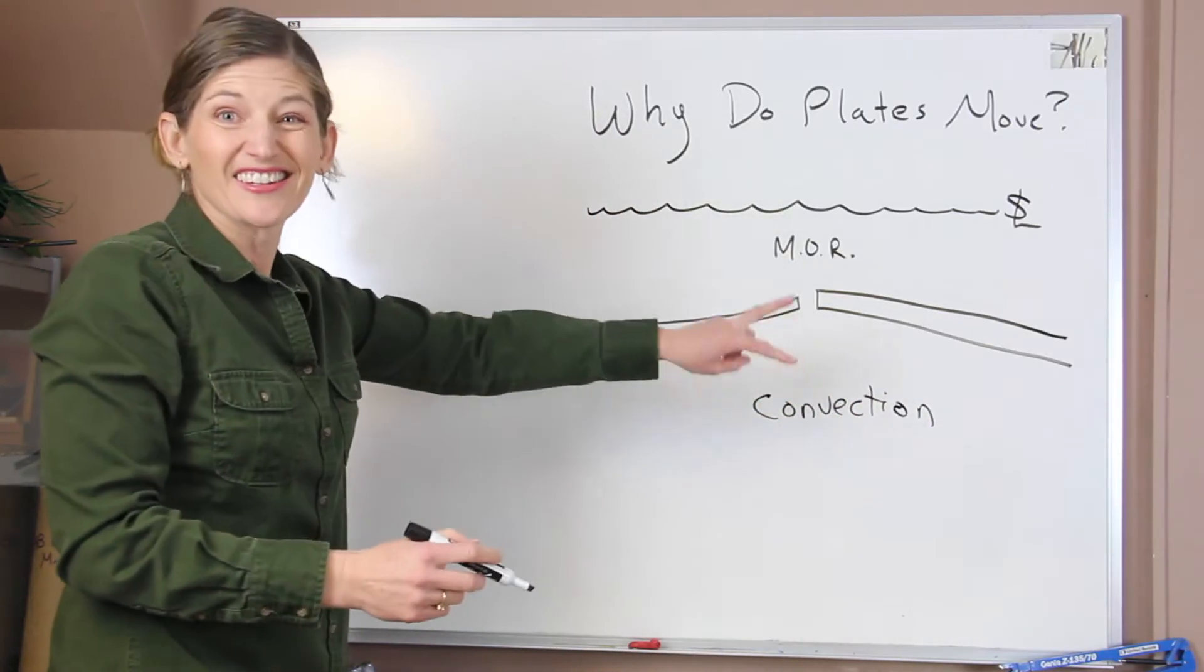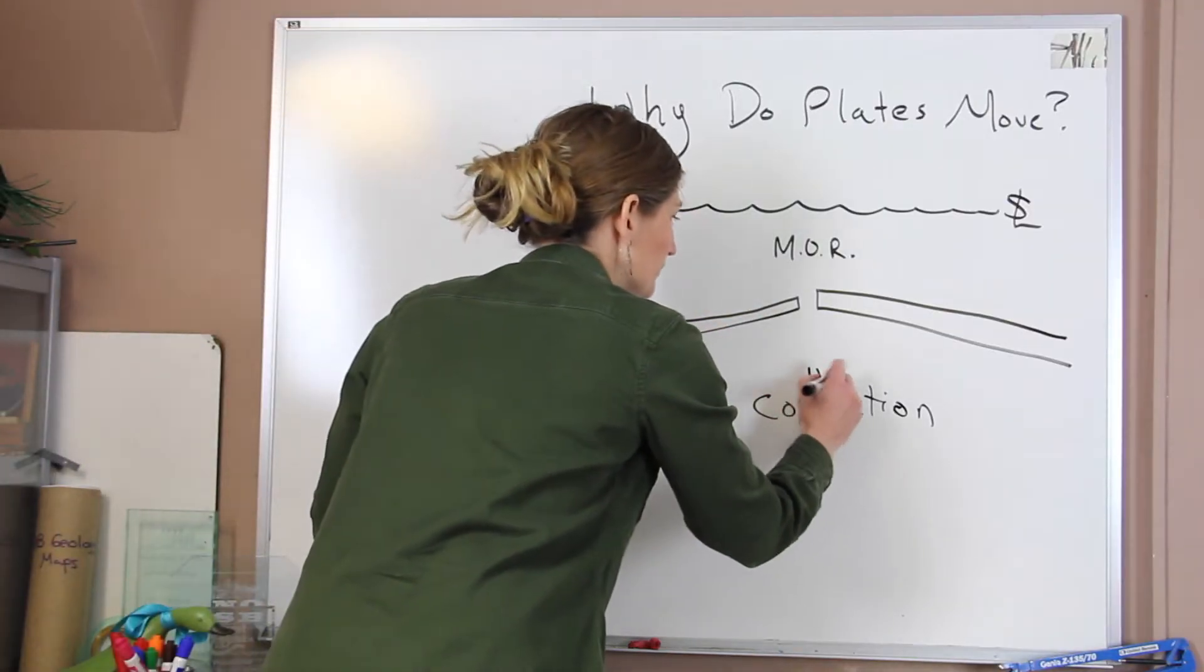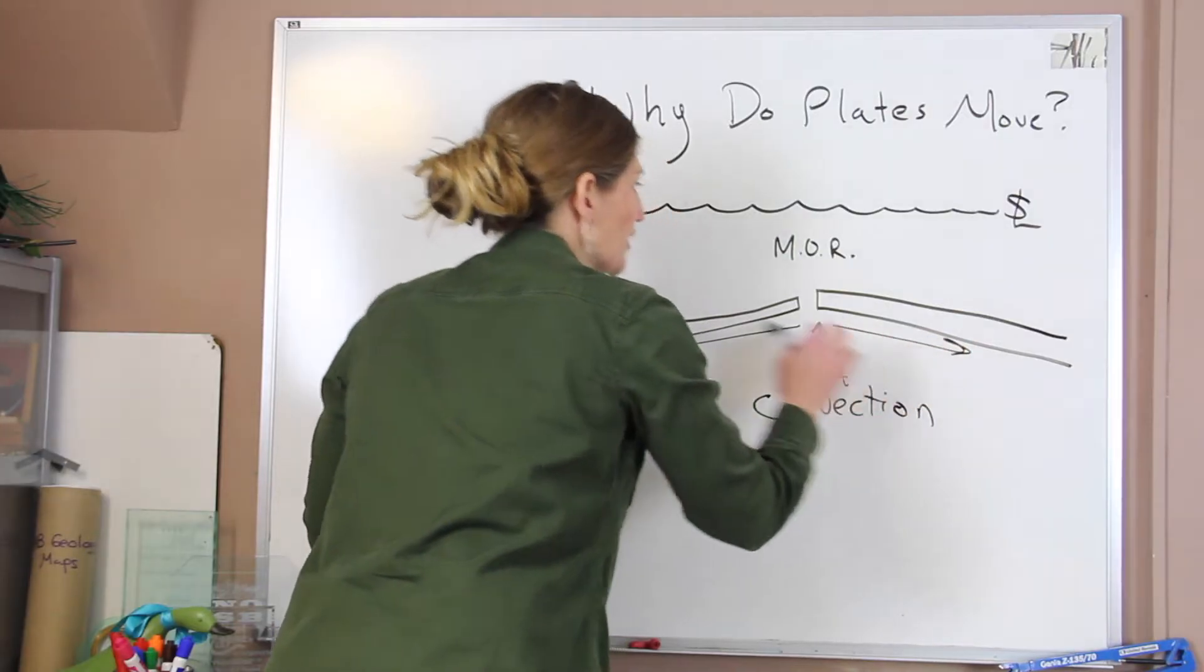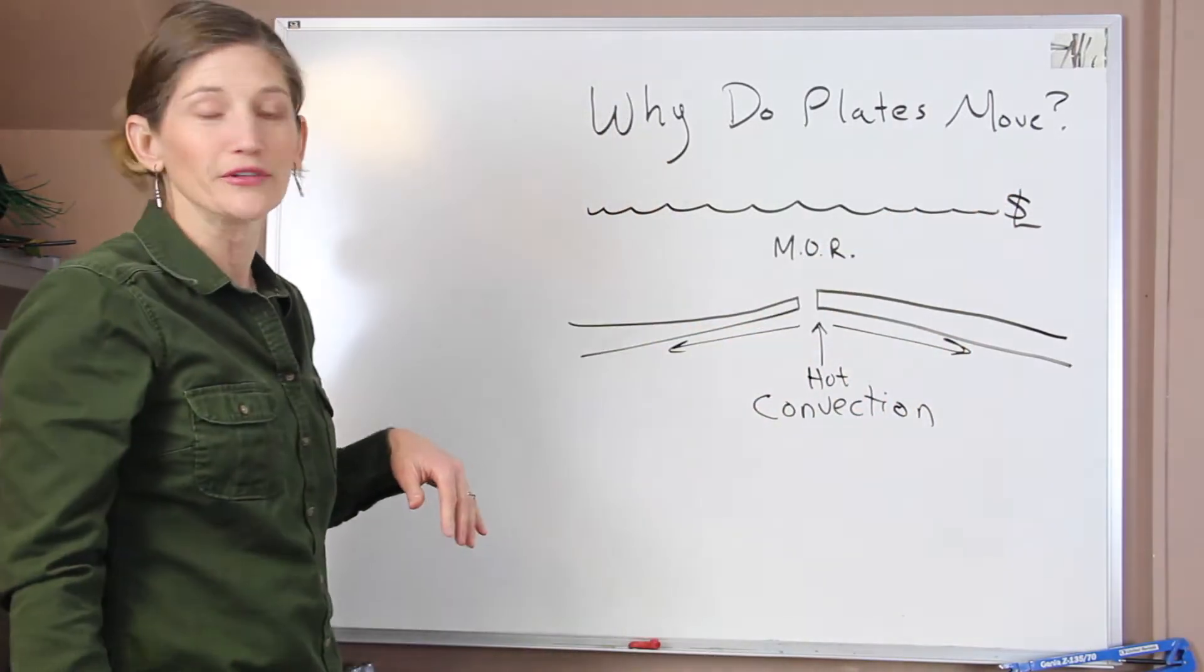Now convection just means we had this hot mantle rising up. They would then move out in the directions, and the plates would get moved on top of it.